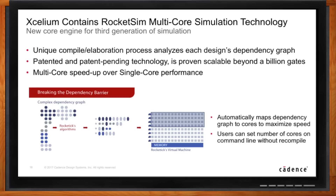And you don't lose any capabilities. It's a simulation just like the simulation you're used to — you have all four states: zeros, ones, Xs, and Zs. You can do X propagation and all of the other things you need to do. You don't have to change anything in your design environment or test environment. It all works directly with your multi-core or single-core simulation.